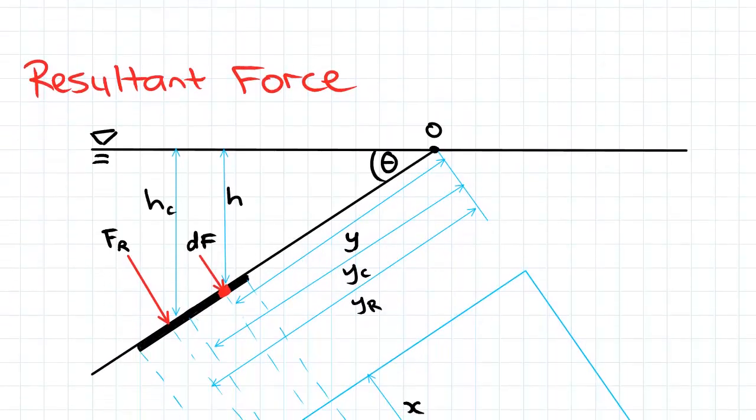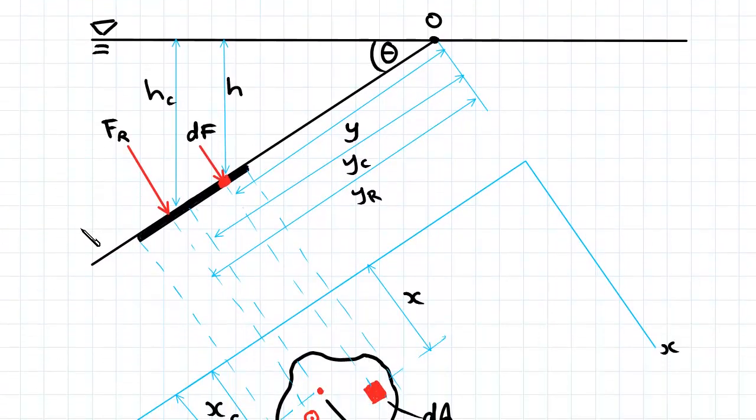So looking at the resultant force, here we've got a diagram of a fluid on an inclined surface at an angle theta. We've got an object on the surface or an area that we're considering, and we're trying to find the resultant force acting on that part of the inclined surface.